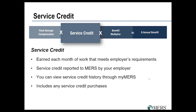The next component is service credit, which is fairly straightforward. You earn a month of service credit for every calendar month in which you meet your employer's minimum definition for a month of service. A standard definition in the MERS system is 10 working days, or 10 eight-hour days in the month. You'd want to check with your employer if you're not sure of your plan's minimum requirement. Generally, if you're working during that month, you're earning service credit for that calendar month.